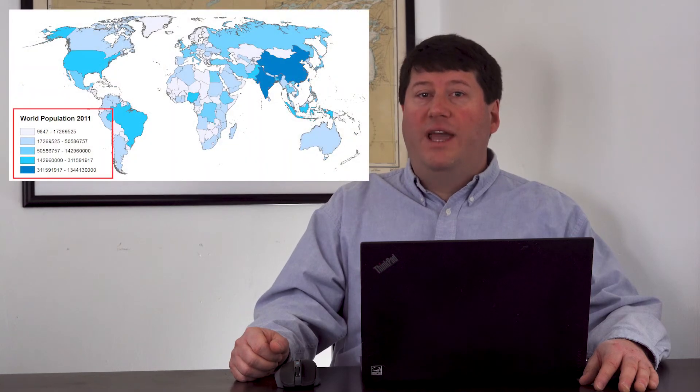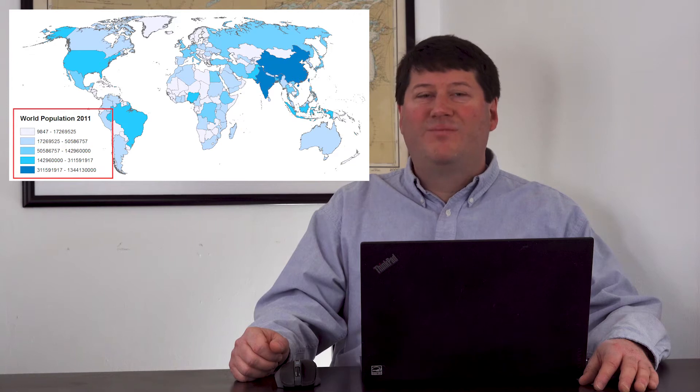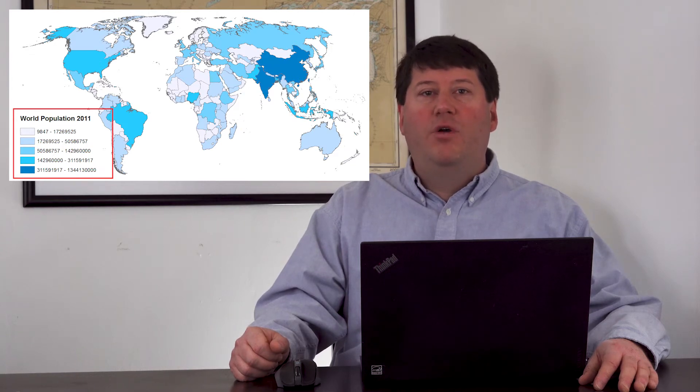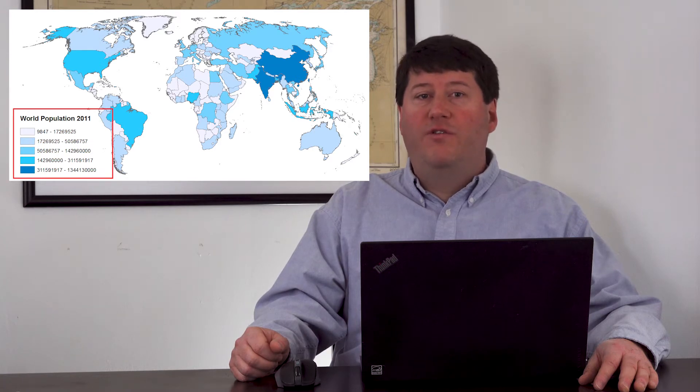For example, you can consider a legend on a map to be a type of metadata, as the map legend tells you what the map means in terms of symbols, colors, and other information. Another simple way you might think of metadata is thinking of a can without a label — the label tells you what's inside the can.